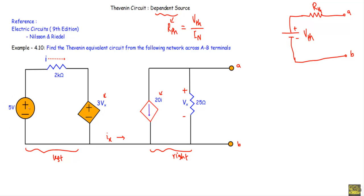The left portion contains an independent voltage source of 5V. Therefore, the current supplied from left to right — if I denote that with IX — there will be no return path. As the current from left to right will not have any return path, IX should be equal to zero. Also, the right portion contains no independent source, so it cannot supply any current to the left portion either. Therefore, the currents in both directions are equal to zero — there will not be any current flow in either direction.